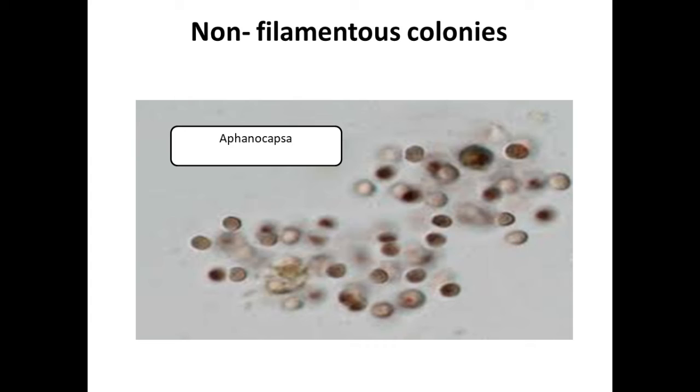When the cell divides in one plane, if the cell divides in many planes, it forms three-dimensional colonies. When the cell divides in one plane, ultimately it results in the formation of the filament.